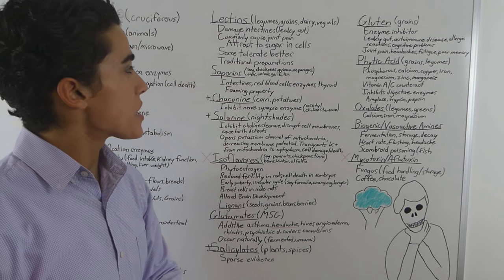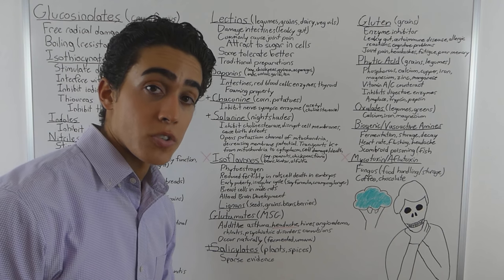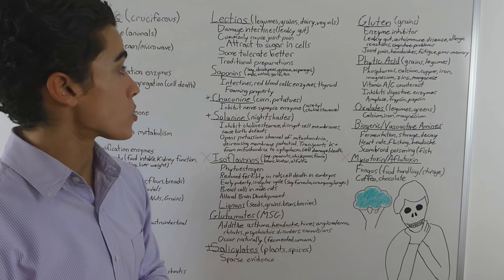Some tolerate lectins better than others. But these can be reduced through traditional methods such as fermentation or soaking.